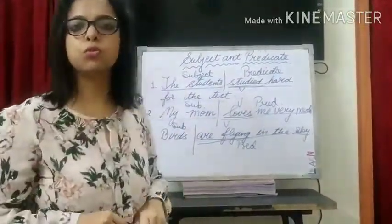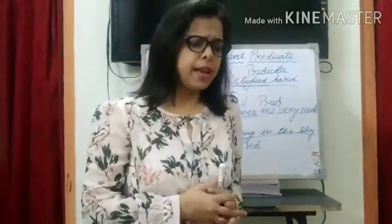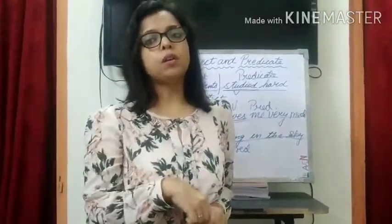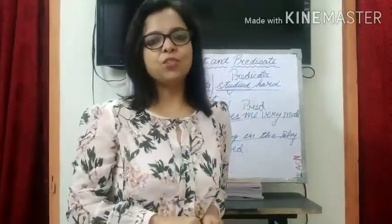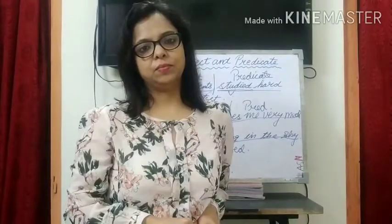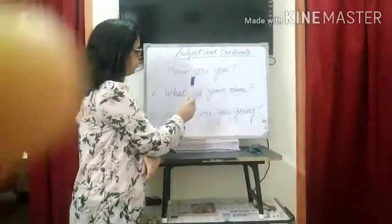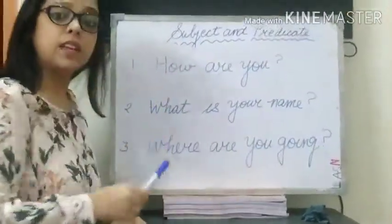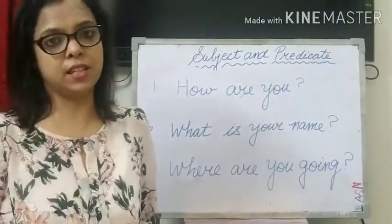But it is not always so, children. In interrogative sentences or exclamatory sentences, the subject may come after the predicate, or a part of the predicate may come before the subject. Let's see a few examples: How are you? What is your name? Where are you going? Can you tell me which type of sentences these are? Yes, they are interrogative sentences.